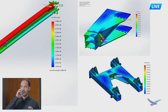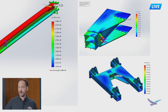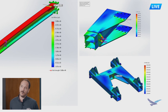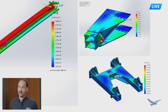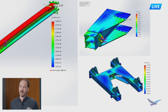Quick advice for new FEA users: always start simple. Simplified to just one beam rather than the full system. If you have an assembly like a weldment, start with one part, make sure all your fixtures work and it's behaving with a random load before you add more parts on top, putting in connectors and additional forces as you go.